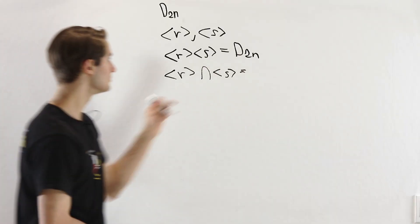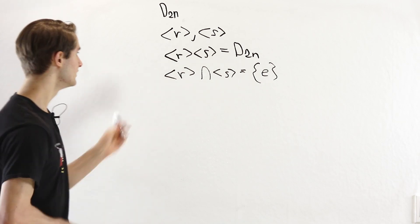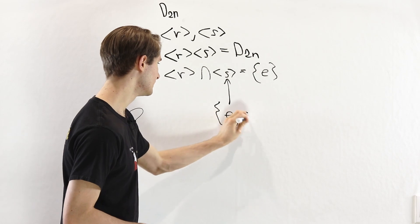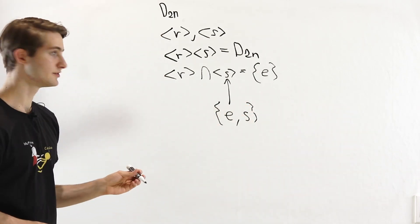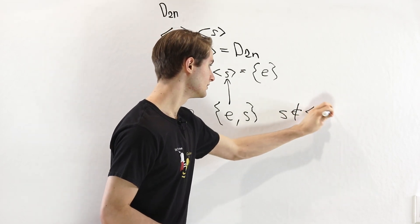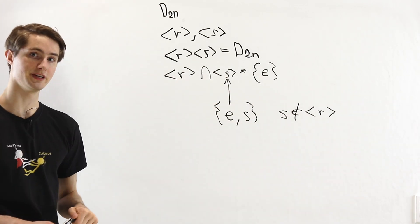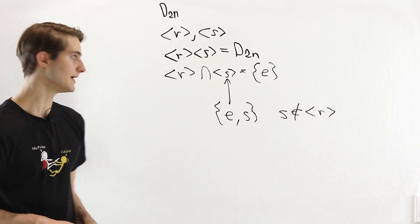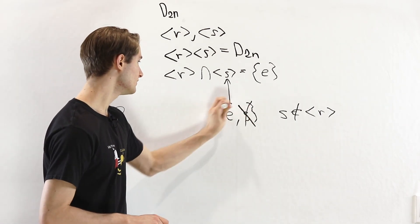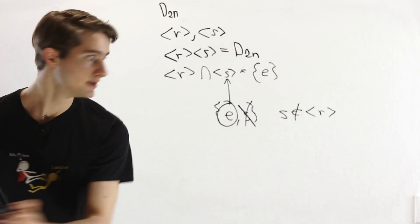The second condition we need is that the intersection of ⟨R⟩ and ⟨S⟩ is just equal to the identity element. The subgroup generated by S contains only the identity element and S. We know that S is not a rotation — it is a reflection — so S is not an element of the subgroup generated by R; we cannot write it as R to the K. Therefore these subgroups don't intersect at S, so they only intersect at the identity, which gives us the intersection argument we need.